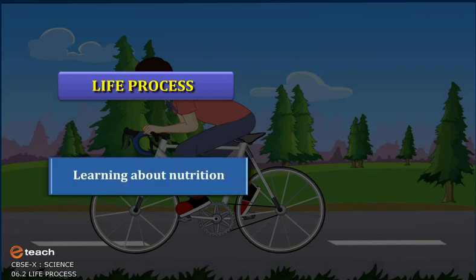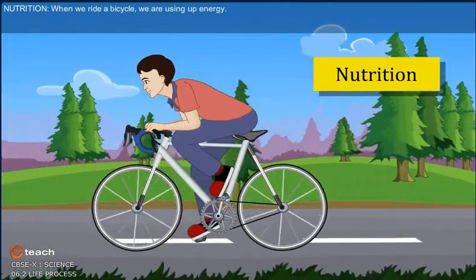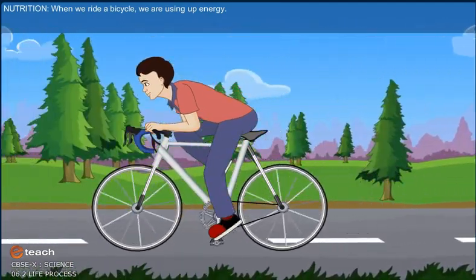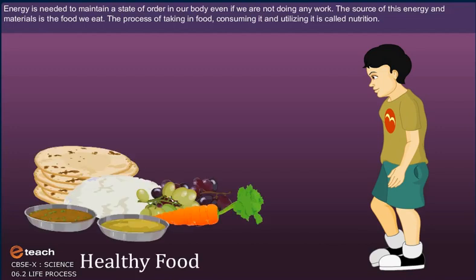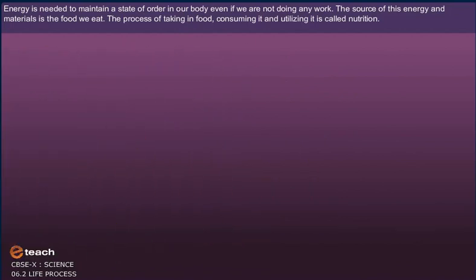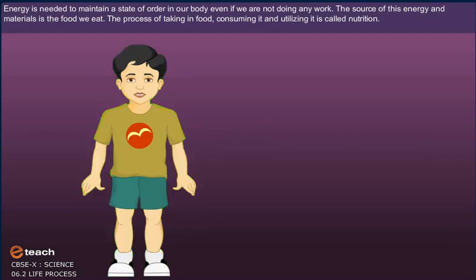Life Process: Learning About Nutrition. When we ride a bicycle, we are using up energy. Energy is needed to maintain a state of order in our body even if we are not doing any work. This source of energy and materials is the food we eat. The process of taking in food, consuming food and utilizing it is called nutrition.